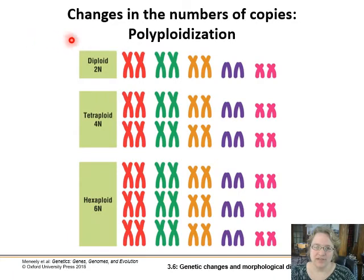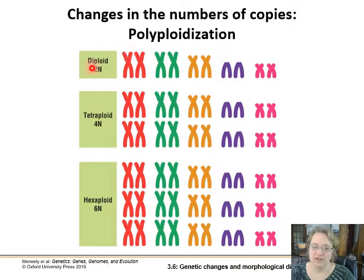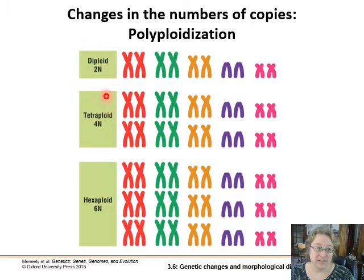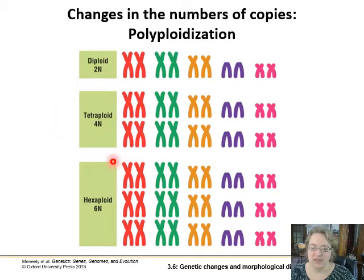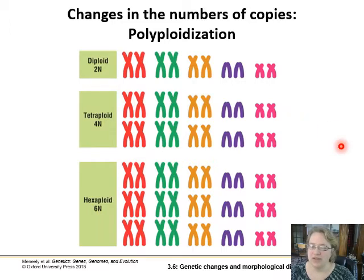Not only can the sequence of DNA in the chromosomes change, but the actual number of copies of chromosomes can change — polyploidization. If we have 2N, we have two copies of every chromosome, that's diploid. That could get doubled in a meiosis non-disjunction event and you get a tetraploid individual with four copies of every chromosome. This can keep going higher — wheat, for example, is actually hexaploid, with six copies of its chromosomes.